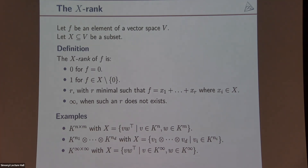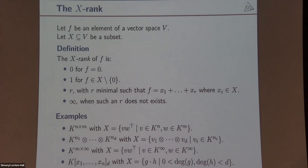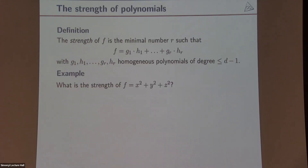Another interesting notion of rank arises if you take X to be a set of elements you consider 'simple.' I want to look at the space of polynomials homogeneous of degree d. The simple elements are the polynomials that are reducible — and that is going to be the definition of strength. So the strength of a polynomial f is the minimal number r such that you can write f as a sum of r products of lower-degree polynomials.